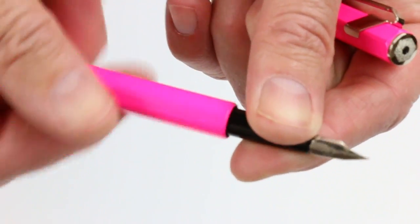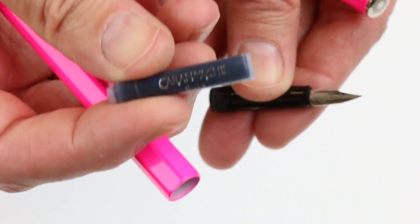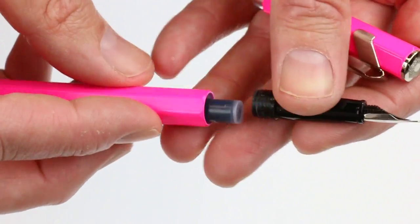It's a cartridge style fountain pen. So to change the ink you unscrew that section from the barrel of the pen. Included with the pen is a Caran d'Ache standard international ink cartridge.